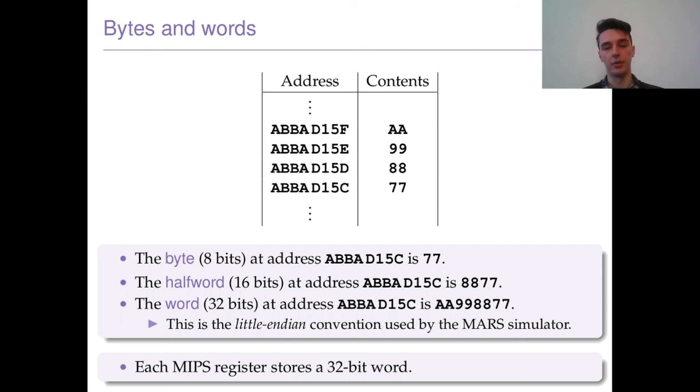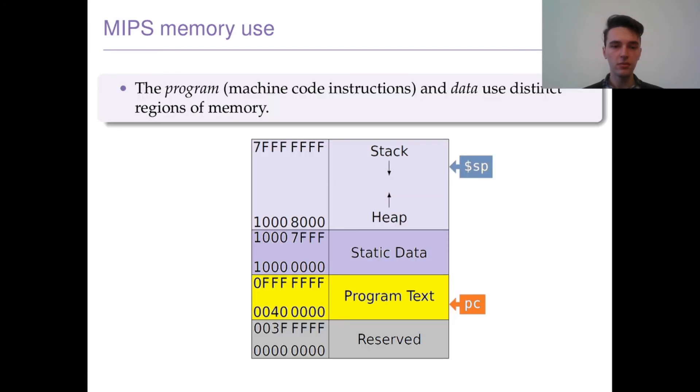We'll be using little-endian, where you read from the top down. Each MIPS register stores a 32-bit word, so we can get a lot more power by using this little-endian convention to read more information at once rather than just going byte by byte.